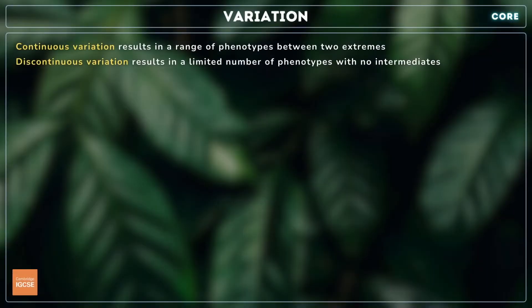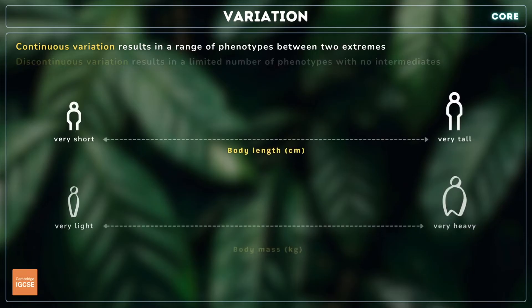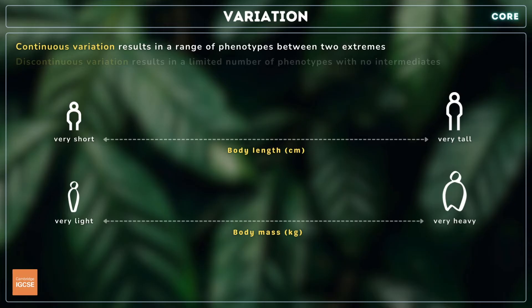Variations between organisms of the same species can be continuous and discontinuous. Continuous variation results in a range of phenotypes between two extremes. Examples include body length and body mass. There are all possible intermediates between tall and short, and heavy and light. You don't simply fit into one category or the other.